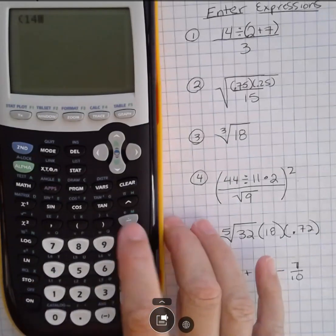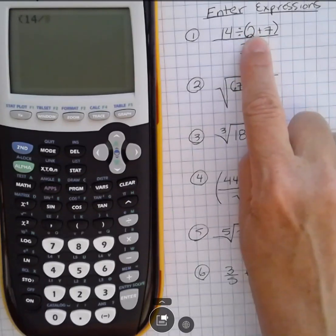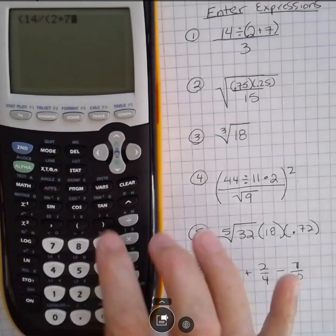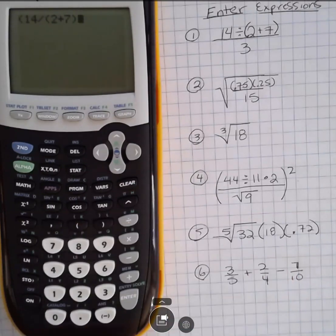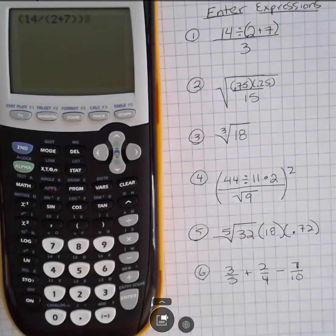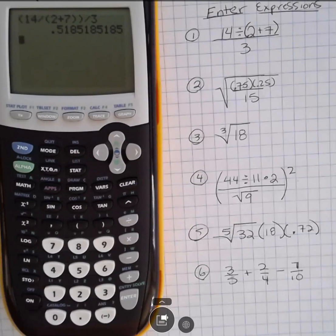So I'm going to do 14 divided by, and again I don't want to divide just by 2, I want to divide by 2 plus 7. So I have another set of parentheses, 2 plus 7, then I'm going to end those parentheses. Now I'm done with the numerator so I'm going to end those parentheses, so I've got two sets of parentheses. Whenever you have one on the left, you need to have a corresponding one on the right. Divide that by 3, hit enter to get your answer.